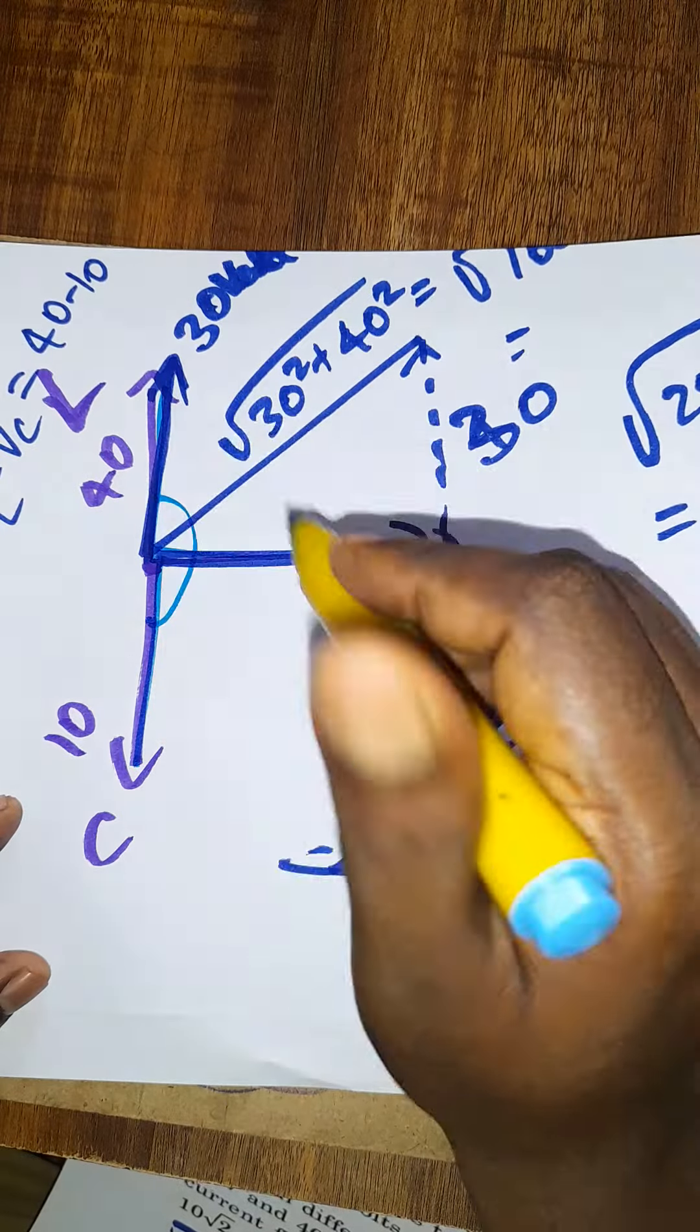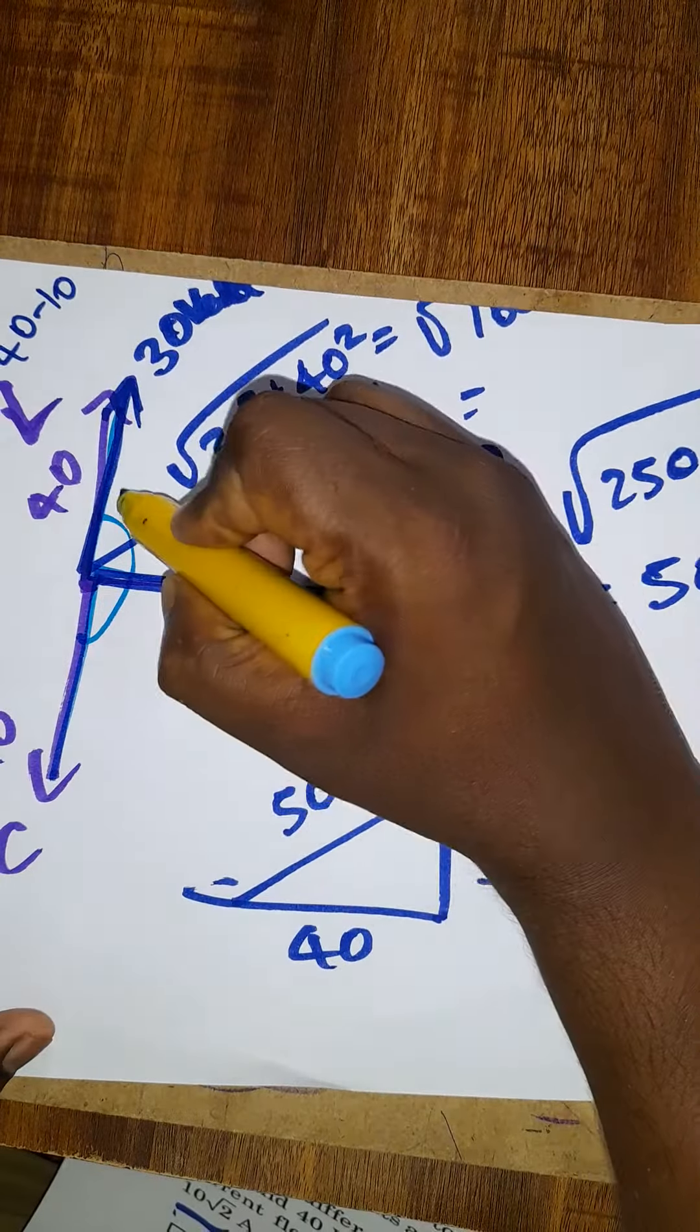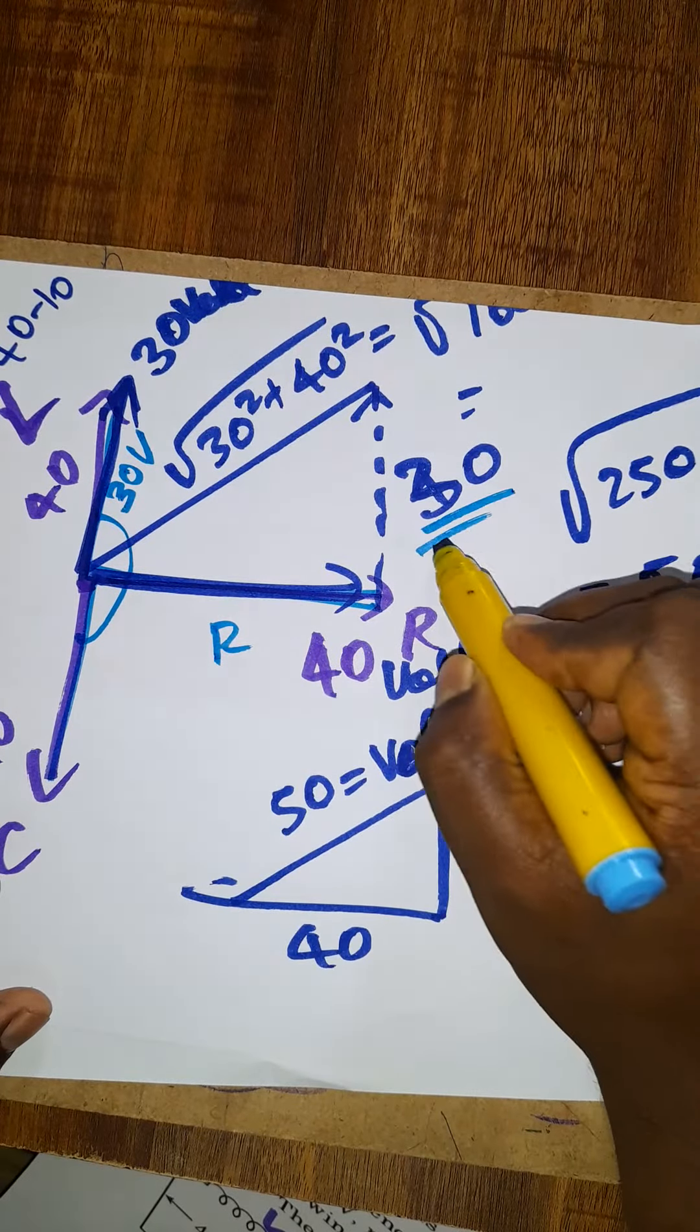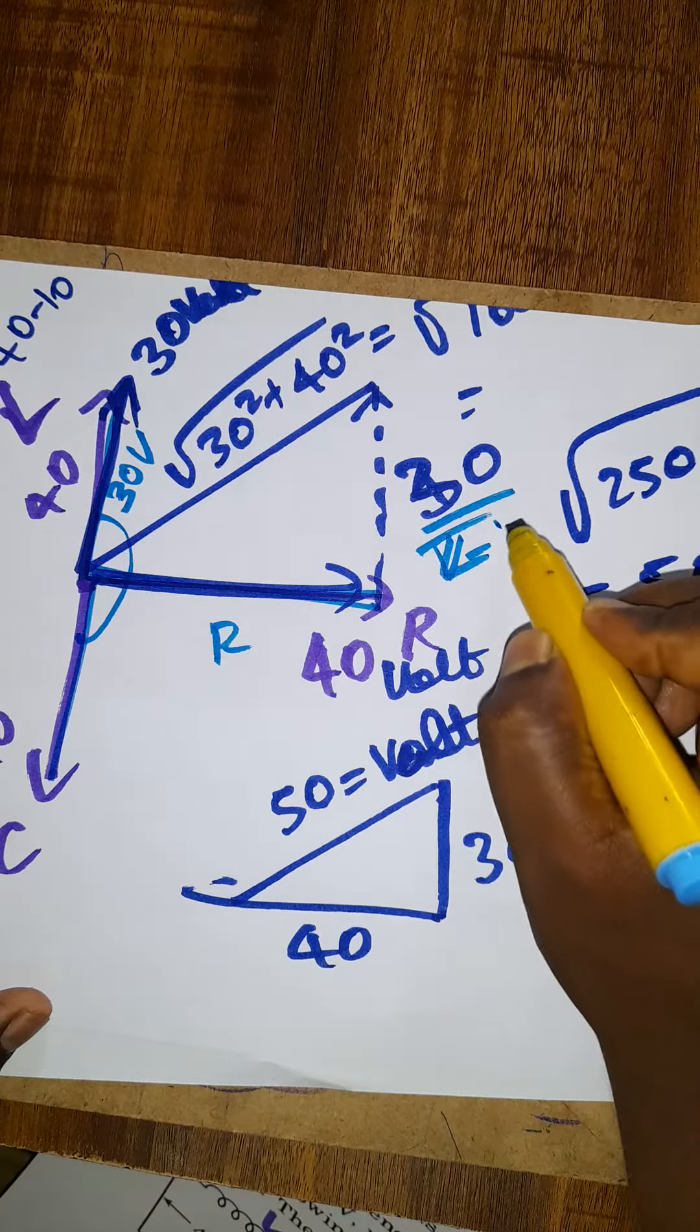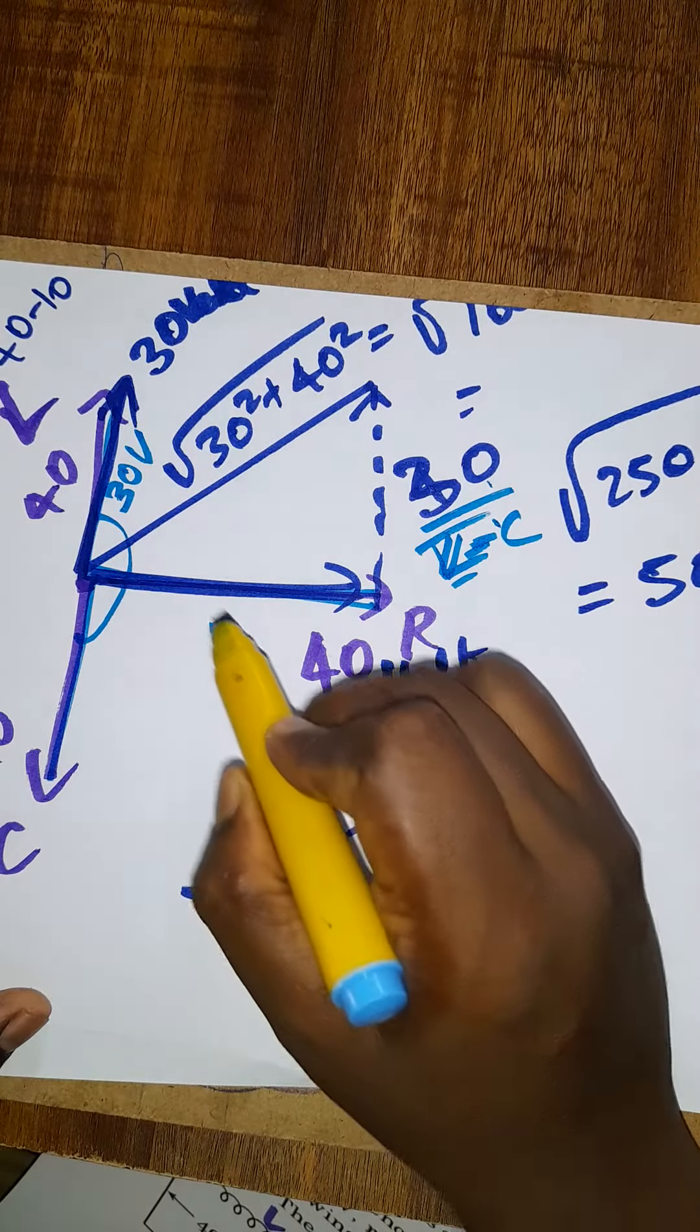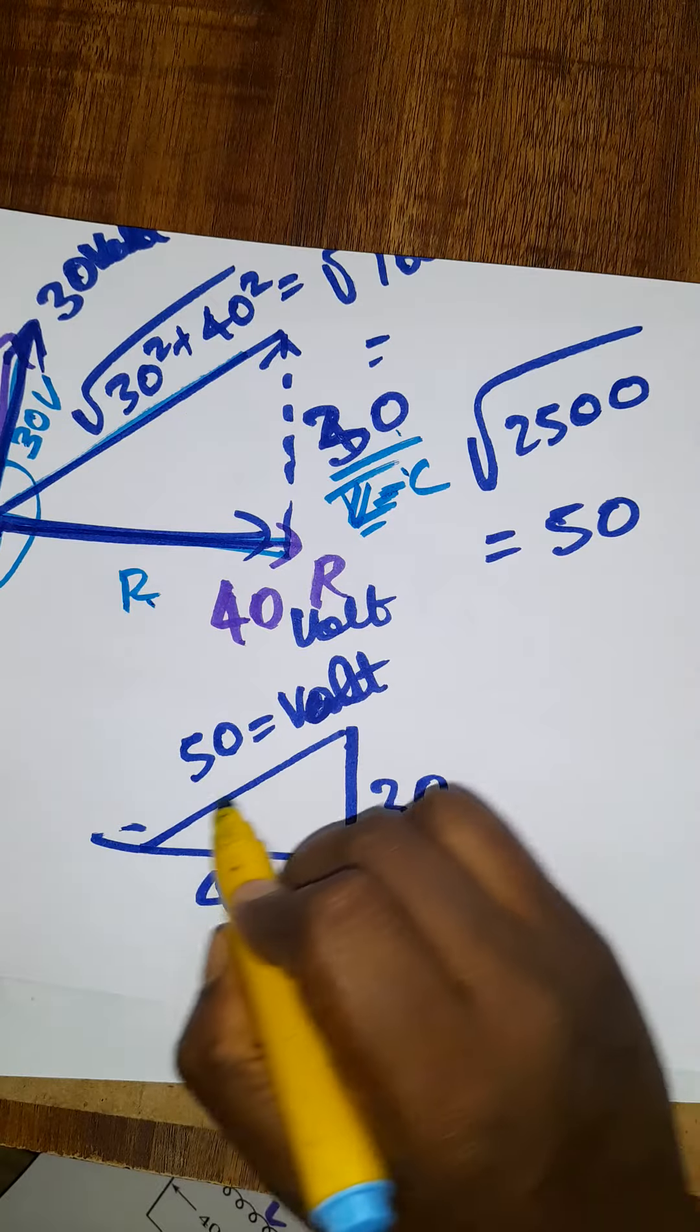At this side, 30 volt will be there. This side will be 40 volt, which is the resistance. This is the difference between VL versus VC, inductance versus capacitance. 30, 40 - this resultant is going to give us 50 volt net resultant voltage.